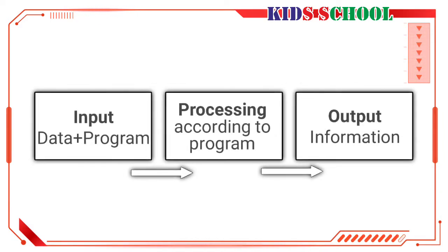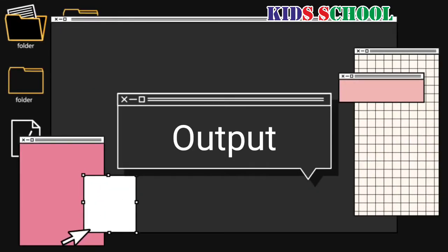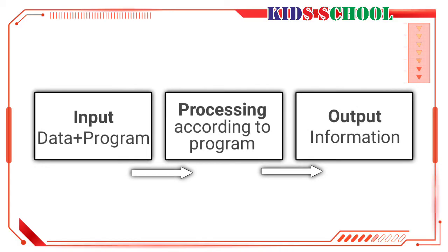Processing: When the computer works on data according to instructions, it is called processing. Output: Information generated by processing data is called output. It is displayed by the monitor or printed by a printer.